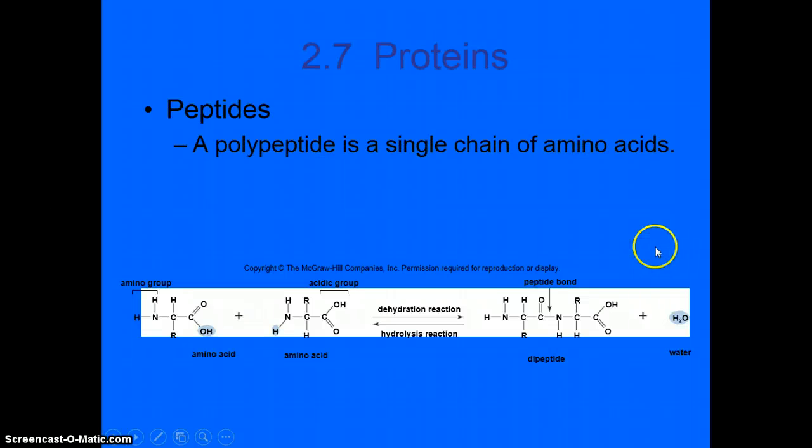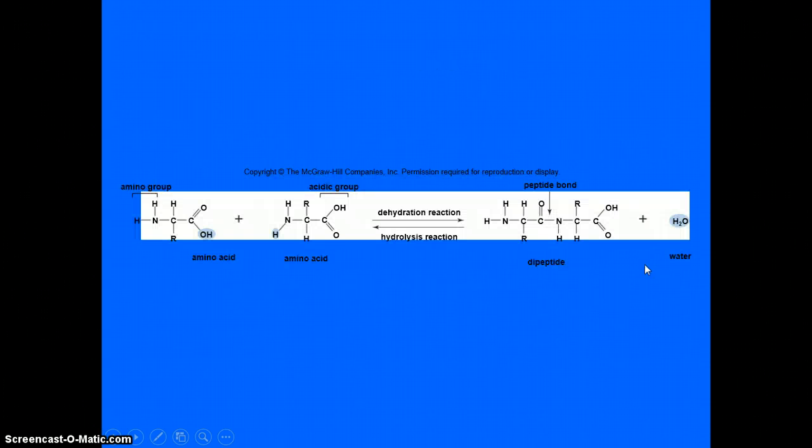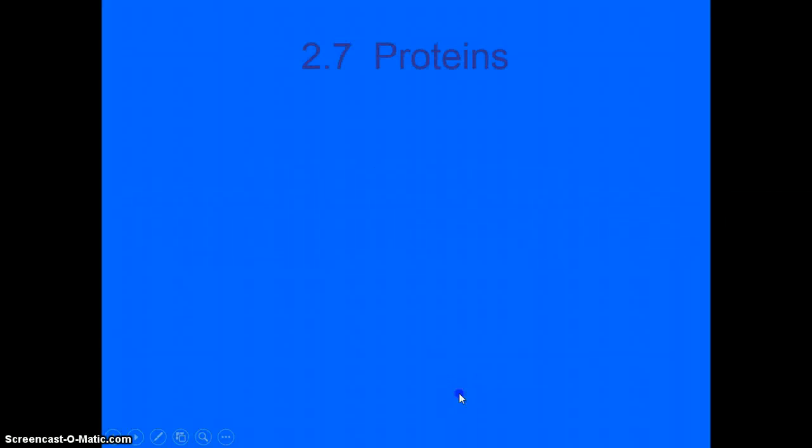Peptides are what make up proteins. So a polypeptide is a single chain of amino acids. And it bonds between two amino acids to form a chain. And here we see an amino acid plus an amino acid and another dehydration reaction. And this peptide bond forms and it pulls those two amino acids together and it gives off water. And of course, that is reversible. And you could go through hydrolysis in order to break those amino acids apart.